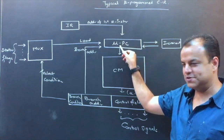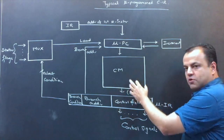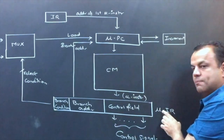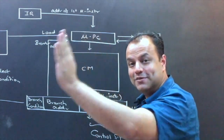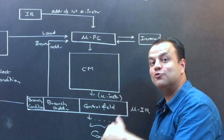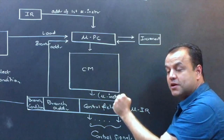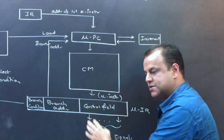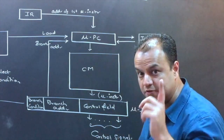From IR we get the address of the first micro instruction, given to MUPC. From MUPC we go to control memory, fetch a micro instruction, and store it into the Micro Instruction Register (MUIR). These names mirror the real memory analogy: PC gives the address of the instruction, we fetch it from memory and store it in IR. Similarly, MUPC gives the address of the micro instruction, we fetch it from control memory and store it in MUIR.